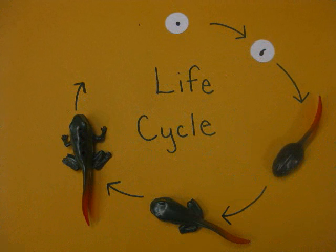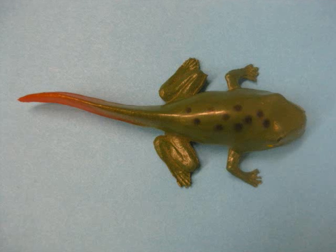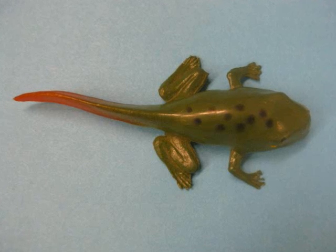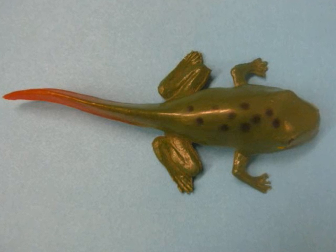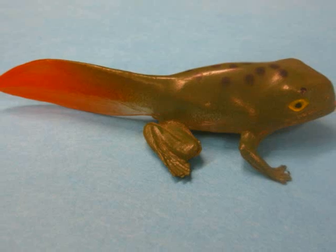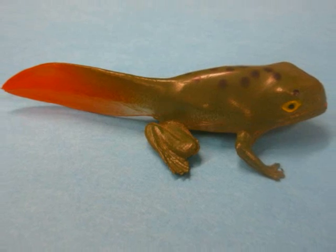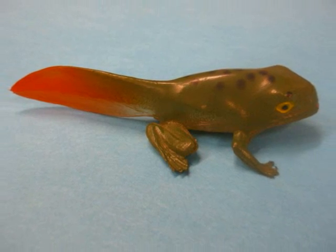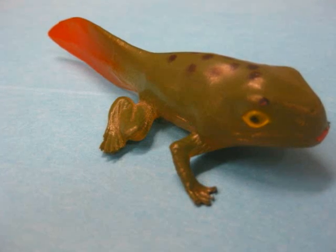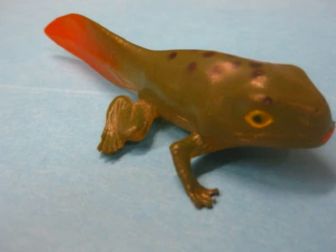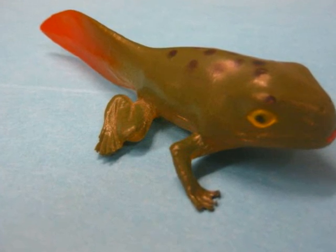The fifth stage is the end of the changing of the tadpole. In this stage, the front legs grow, the skin sheds, the mouth widens, and the tail becomes even shorter. The lungs also become more developed.